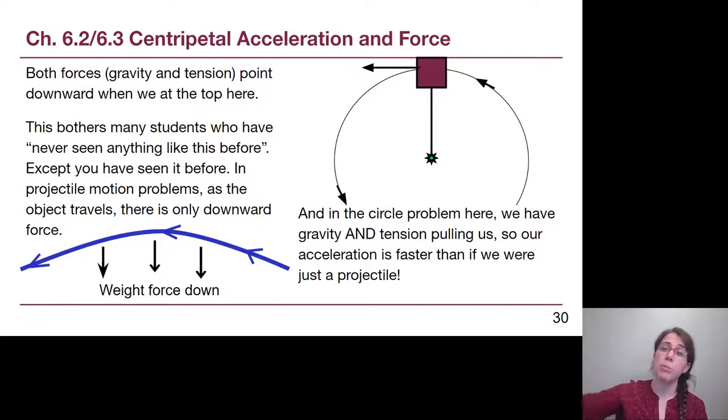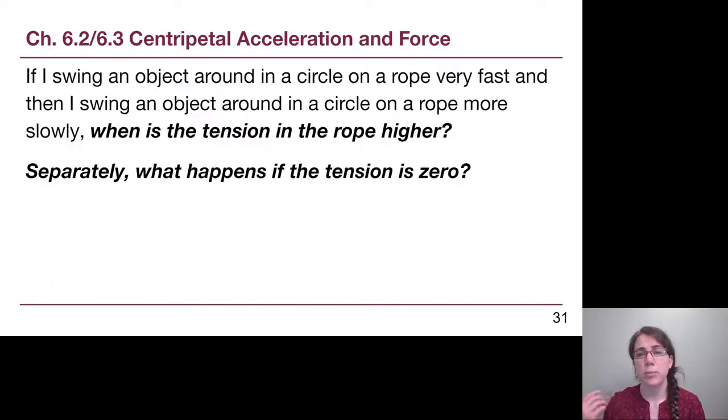It's worth noting that at the top of the circle in the vertical circle, all of the forces that we're going to draw point straight down. A lot of students decide that that can't possibly be the case. If there's multiple forces, they have to be in opposite directions. But we have absolutely seen situations where the only force we have is straight down. Projectile motion is that example entirely. Gravity is the only force acting on a projectile. And in this case, when we have a mass on a string, because there are multiple forces pointing downwards, we can actually have this thing move faster and in a tighter loop than if we were just to throw it across the room and have projectile motion.